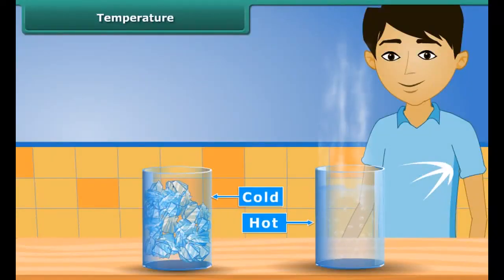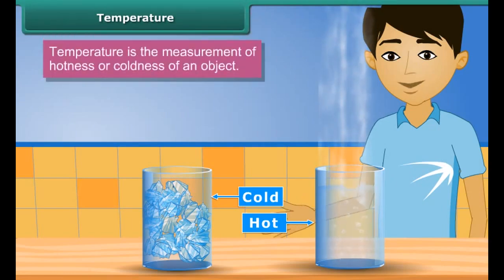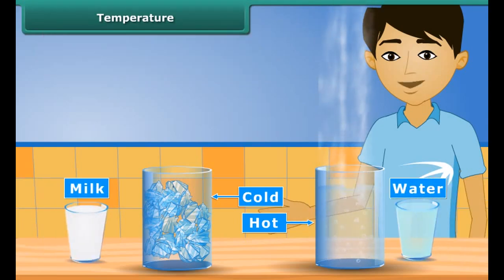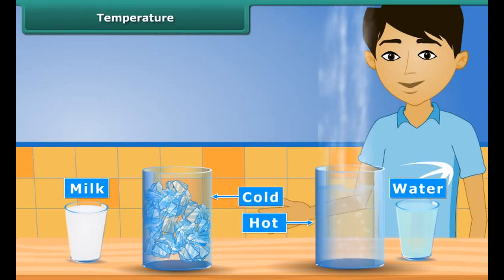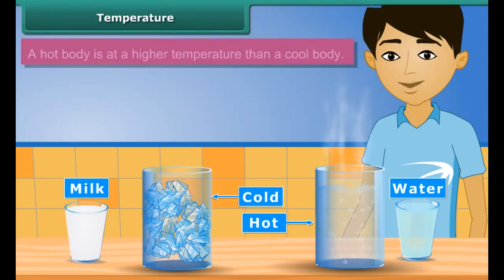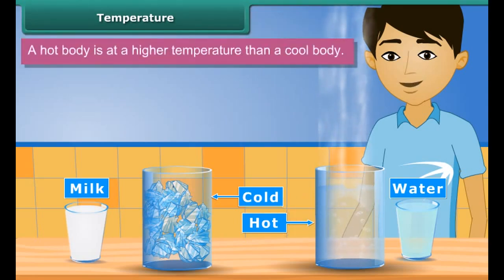Now we will learn the concept of temperature. Temperature is the measurement of hotness or coldness of an object. We say that water from the fridge is cold and milk is hot — but how much cold is the water? Is it cooler than ice? How much hot is the milk? Is it hotter than boiling water? For this we need a measure to know about coldness and hotness. A hot body is at a higher temperature than a cool body.